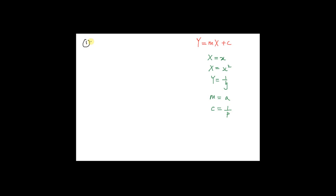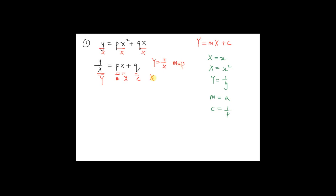Now for the first example: if you have y = px² + qx, this is a non-linear equation. To convert to a linear equation, divide every term by x. You will have y/x = px + q. This is in the form of Y = mX + c, where big Y = y/x, gradient m = p, big X = x, and c = q. You can see that big X and big Y only have unknowns x and y, and gradient m and c only have constants p and q.